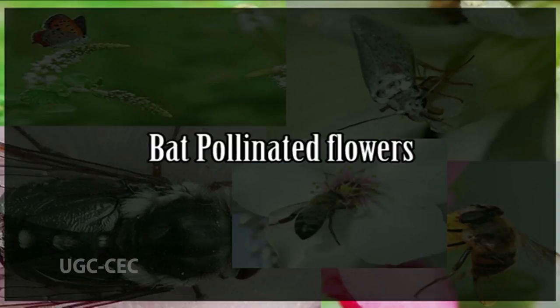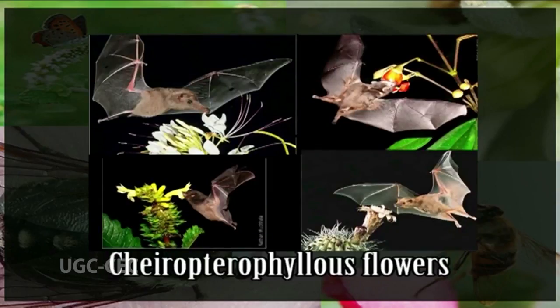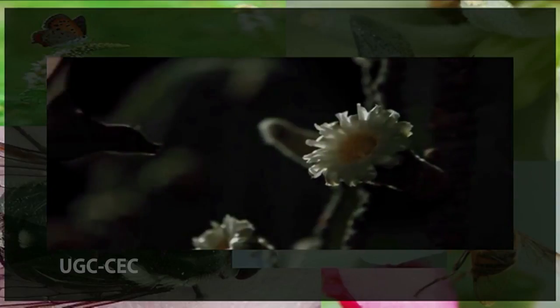Bat-pollinated flowers are called chiropterophilous flowers. These flowers are generally large and open only at night, usually dark-colored but with a strong musky odor which is the odor of bats, and the bats are attracted to the flowers. About 130 genera of angiosperms are bat-pollinated, for example Kigelia, Durio, Erythrina, and Adansonia.